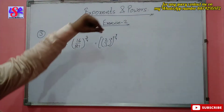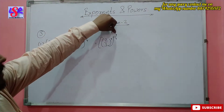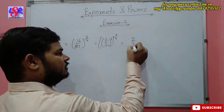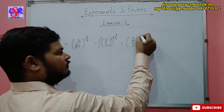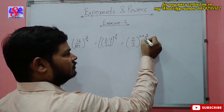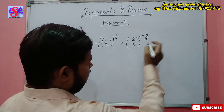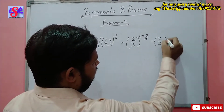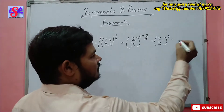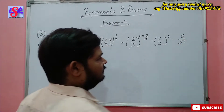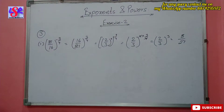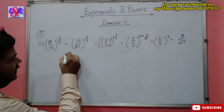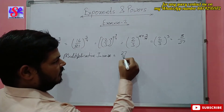We use the identity in which we multiply the powers: 2 upon 3 whole to the power 4 into 3 upon 4. The 4s cancel out, giving us 2 upon 3 whole to the power 3, that is 8 upon 27. Now we have to give the answer as the multiplicative inverse of the given expression, so the multiplicative inverse is 27 upon 8.